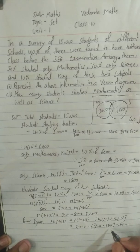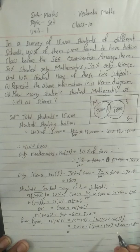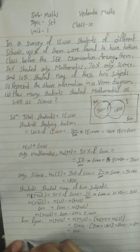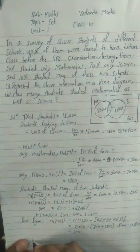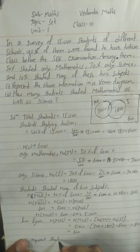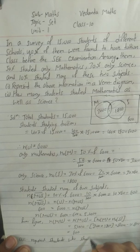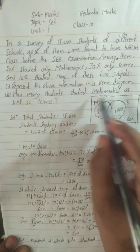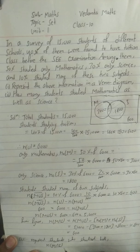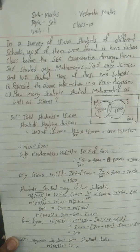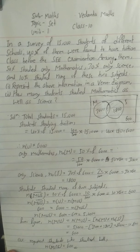5,400 minus 4,800 gives us 600. Therefore the required number of students who studied both mathematics and science is n(M ∩ S) = 600. This is our required answer. Hope you understand. If you have any doubts, you can ask in the comment box. Thank you, take care.